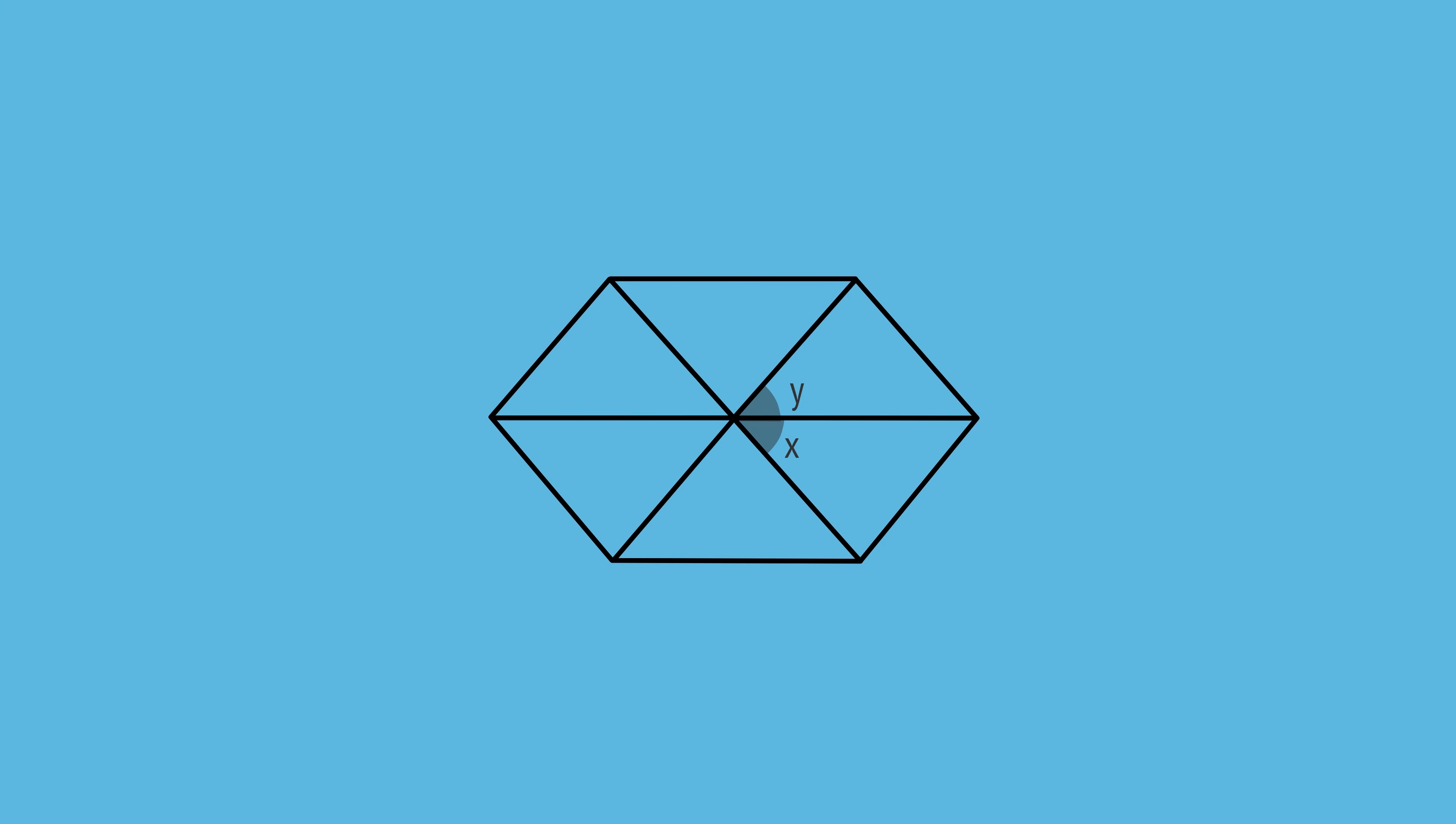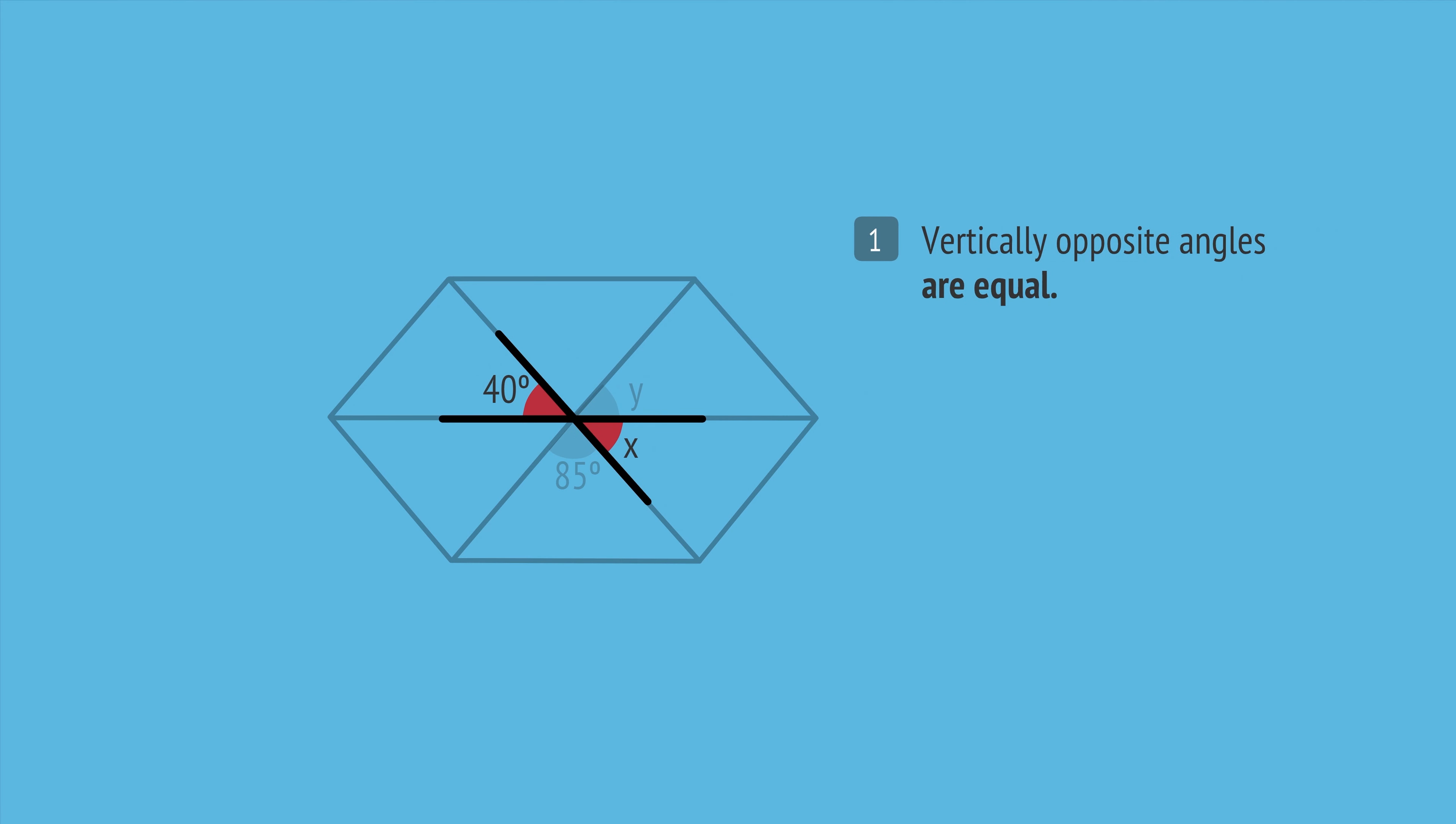In this problem, we need to find angles X and Y, given two other angles. Angle X is vertically opposite to this angle, and so is also 40 degrees.